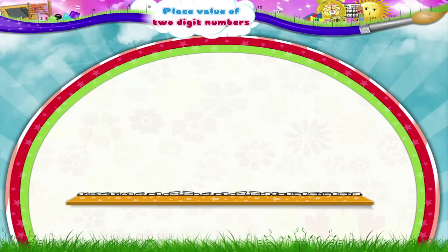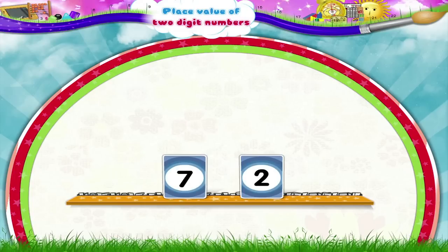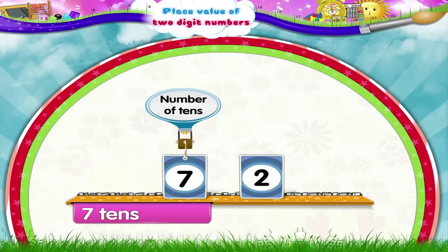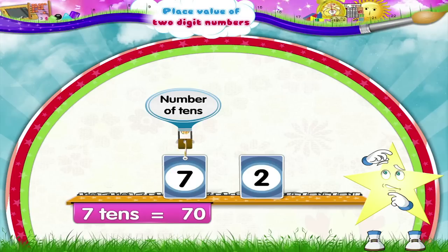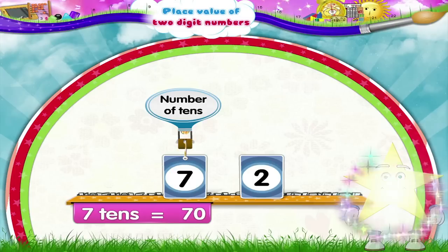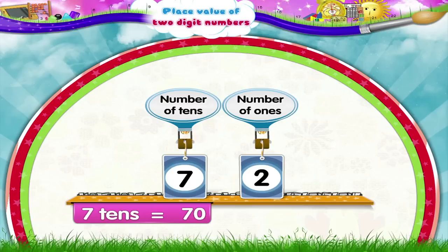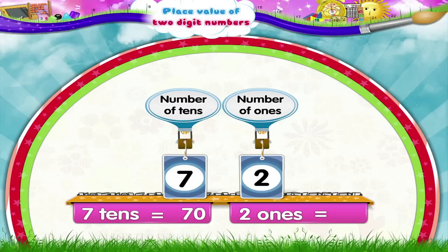For example, consider the number 72. The digit 7 shows the number of tens. So its place value is 7 tens, that is 70. In which place is the digit 2? The digit 2 shows the number of ones. Hence, the place value of 2 is 2 ones, that is 2.